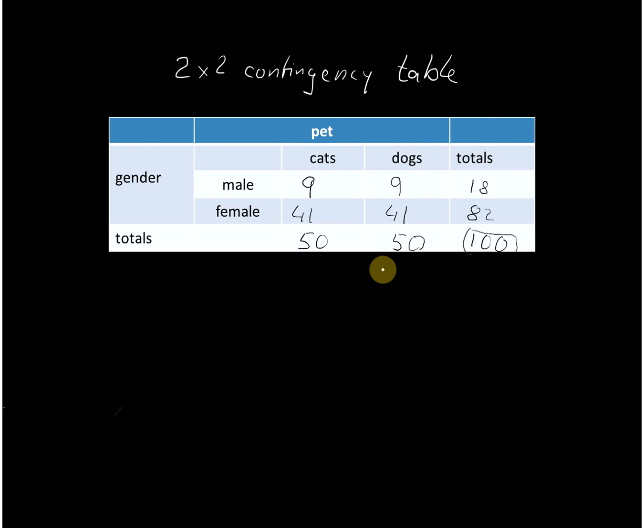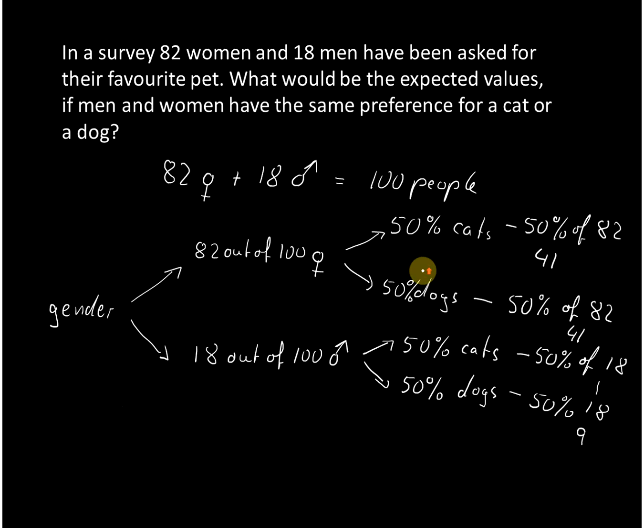The important thing here in this clip is this contingency table and also that you are able to set up a decision tree. Then you can easily calculate the expected frequencies and the expected values for these data. I hope this makes sense and thank you very much for watching.